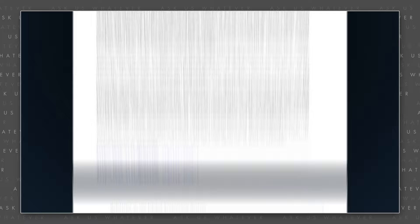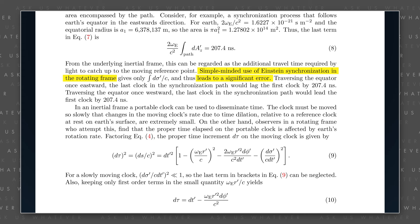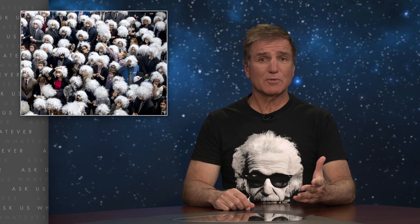Ashby wrote a definitive paper in 2003, which we've posted on our website, about the GPS system and clock synchronization. In that paper he stated: 'Simple-minded use of Einstein synchronization in the rotating frame of the Earth leads to significant error. Traversing the equator once eastward, the last clock in the synchronization path would lag the first clock by 207.4 nanoseconds. Traversing the equator once westward, the last clock in the synchronization path would lead the first clock by 207.4 nanoseconds.'